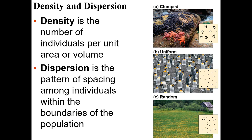Density is the number of individuals per unit area or volume. Some populations are more dense than others — the density of ants in your yard would be a high number, while the density of albatrosses in your backyard would be incredibly low. Dispersion is the pattern of spacing between individuals, which is quite interesting.